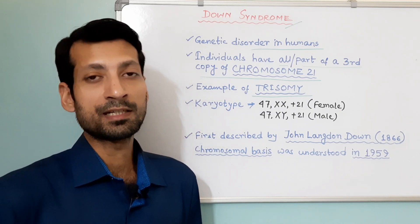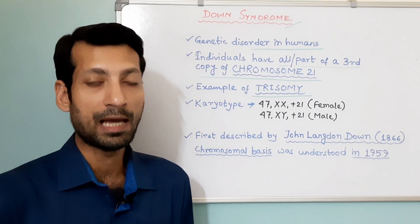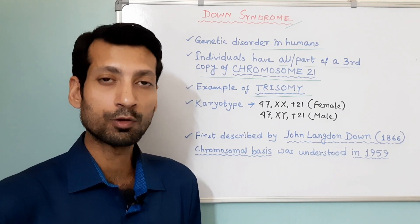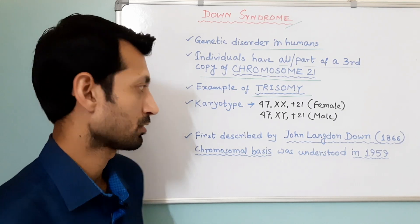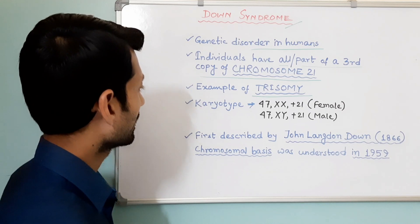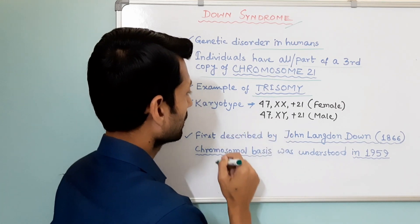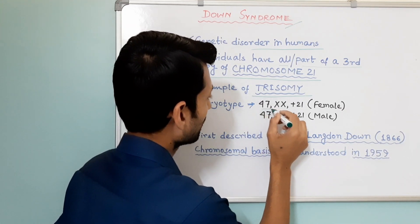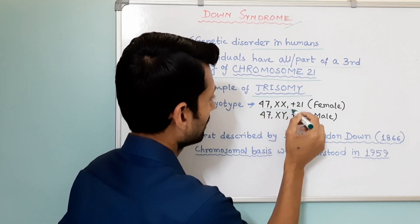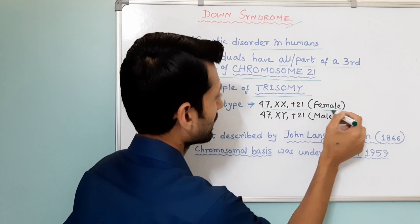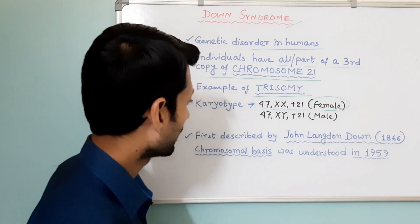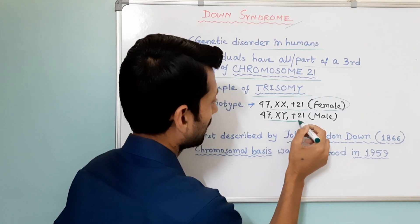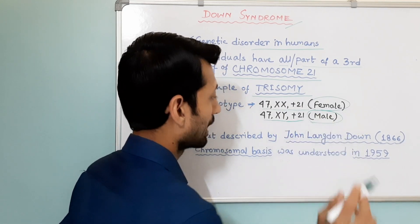In this condition, the individuals have a total of 47 chromosomes, including 2 sex chromosomes. If we write the karyotype, then it is written as 47XX+21 in case of female and 47XY+21 in case of male.